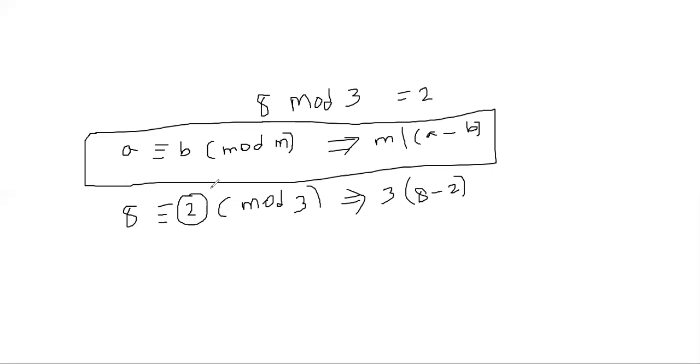For example, I'm allowed to write 10 is congruent to 4 mod 2 because 2 divides 10 minus 4 which is 6. 2 divides 6. You probably notice that 4 cannot be a remainder. When you divide 10 by 2, the remainder is either 0 or 1.